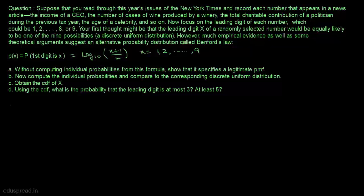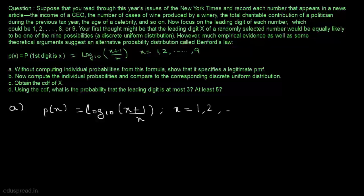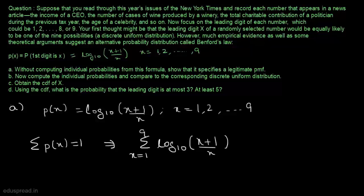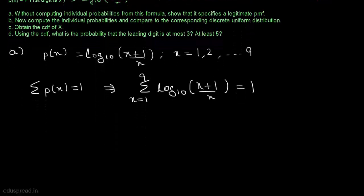In part A, we have to show that this function is a legitimate probability mass function, and we have to show this without computing the individual probabilities. The function is log base 10 of (X+1)/X, where X ranges from 1 to 9. If this is a legitimate PMF, then the sum of probabilities should equal 1, so summation P(X) = 1. If we can show this, then this is a legitimate probability mass function.